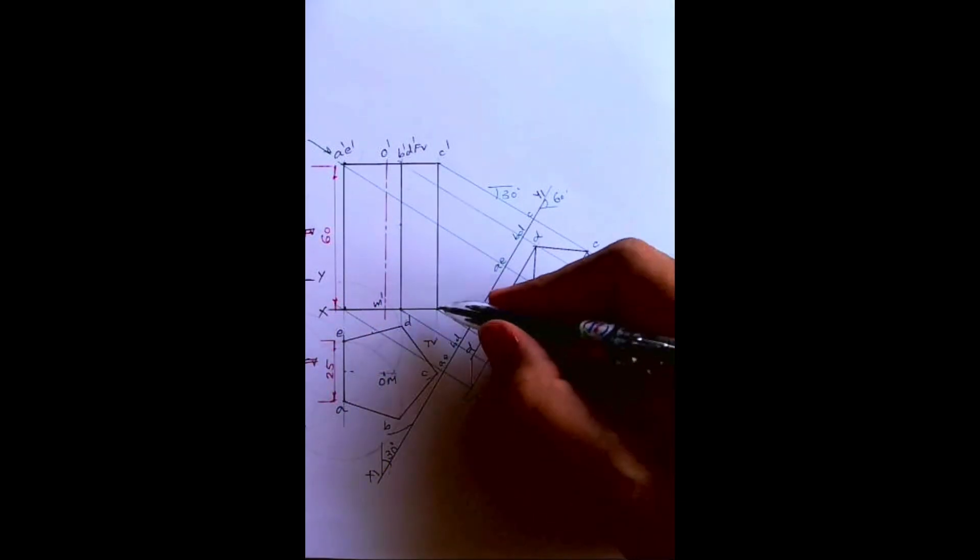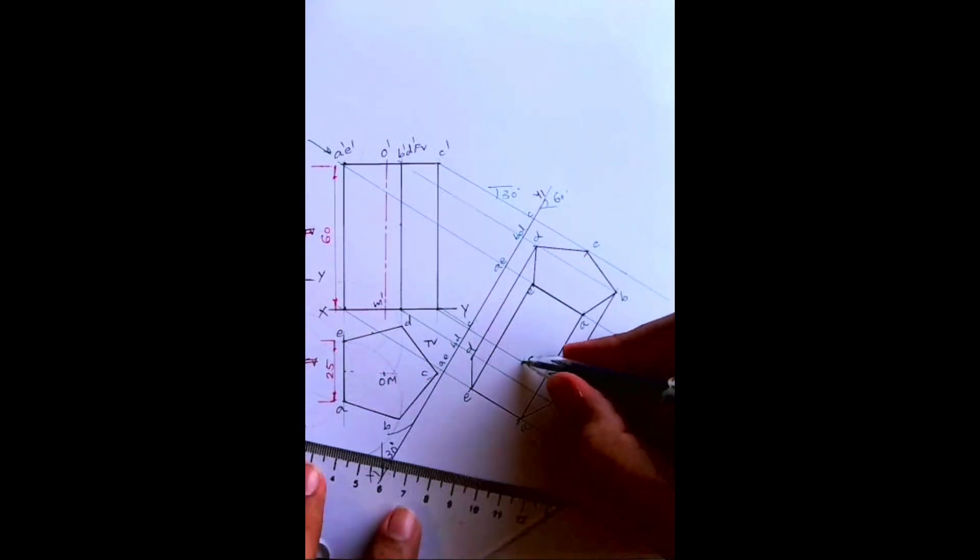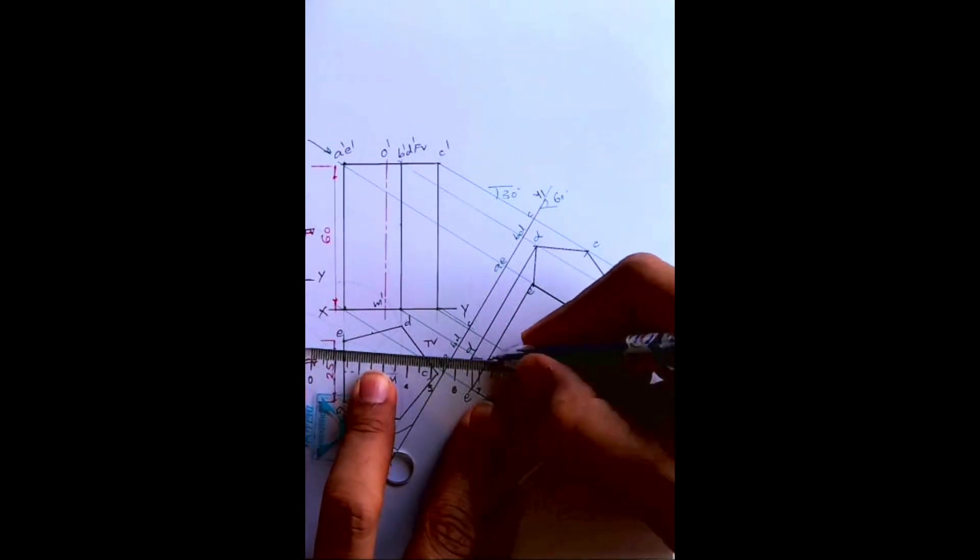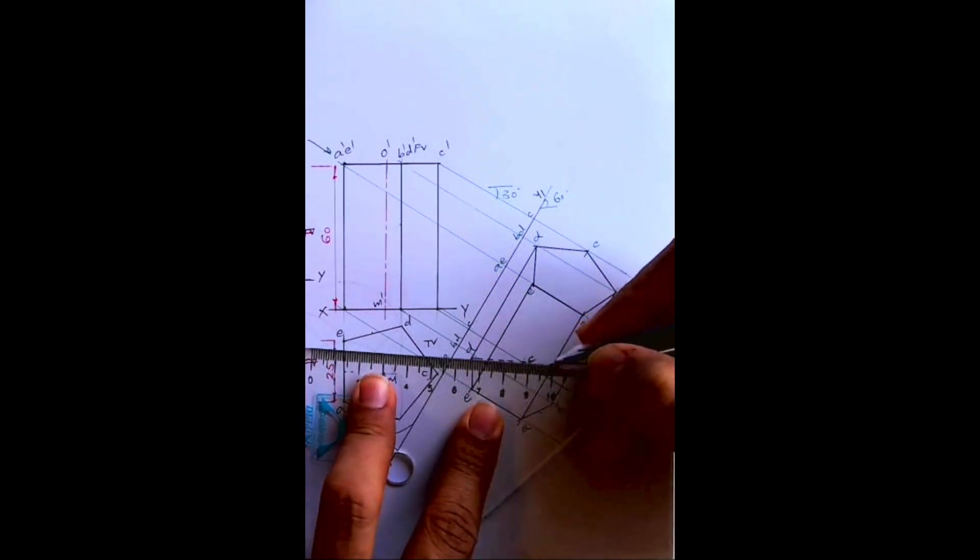So this is how you will get. Now if you see, this point is away from observer, so that is dotted corner. That means all the lines passing through that corner would be dotted.